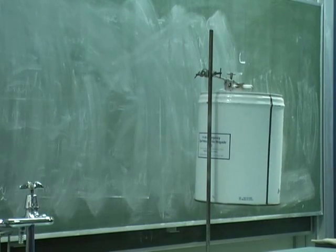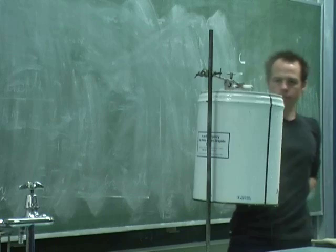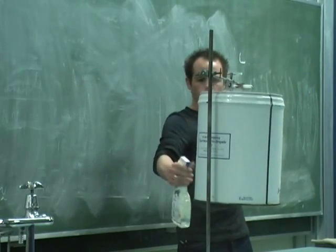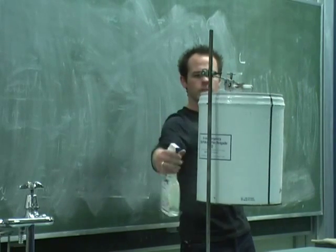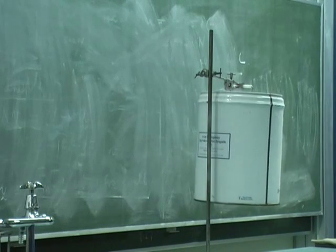So we should get a really good vacuum inside the can and eventually the pressure of the atmosphere outside is going to be so much higher than the pressure inside the can that the can is going to hopefully collapse on itself.